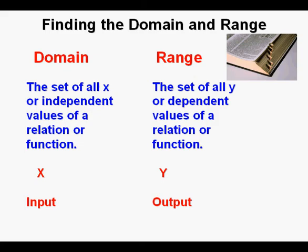Let's consider the vertical and horizontal axes of a graph. Which comes first in the dictionary, vertical or horizontal? Horizontal comes first, so horizontal is associated with domain and vertical with range. I hope this helps you to remember — it helps me.